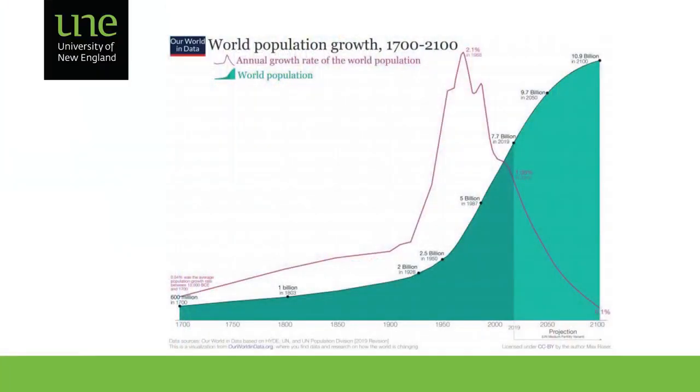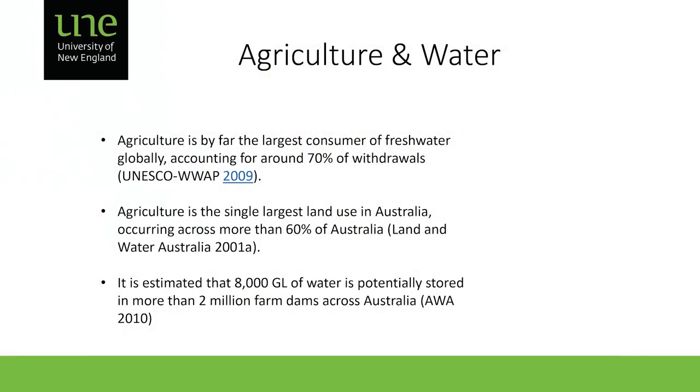I'll start by putting the situation into context. Our human population growth has been rapidly increasing — my gran was born just before the end of the Second World War, I was in high school when there were six billion people in the world, and we're already at 7.7 billion. This is expected to keep increasing for at least the next 30 years, and with that growth we've had to use agriculture to sustain us as human beings.